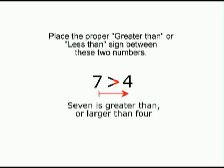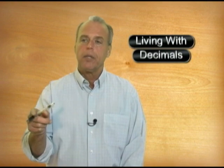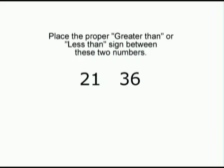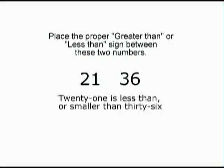Bruno, can you place the proper symbol between these two numbers? Yes, I know that reading from left to right, 21 is smaller than 36. The tip of the arrowhead points to the 21 because that's the smaller number, and I read that as 21 is less than, or smaller than, 36.